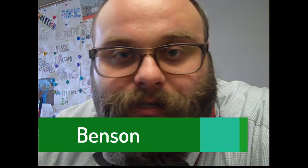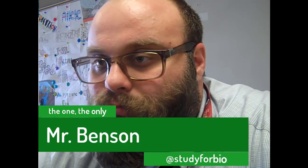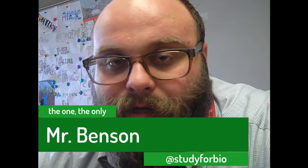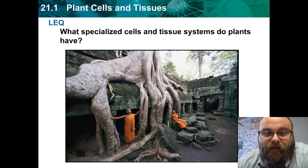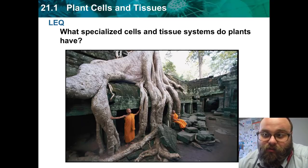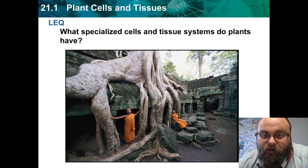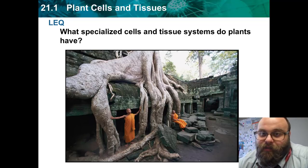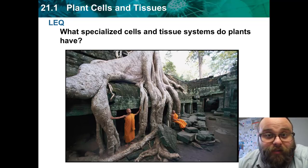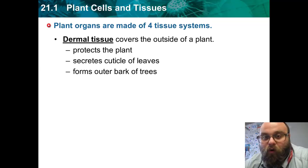This week we're going to talk about plant parts. Plants have specialized cells and tissues in order to undergo the various processes they need to live, like photosynthesis for instance. There are four major tissue types in plants.